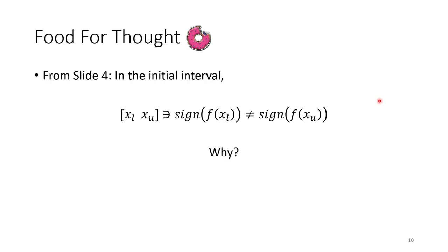I want to leave you with something to think about. In the initial interval, the signs of f(xl) and f(xu) must differ, otherwise the algorithm fails. But why does the algorithm fail? There are at least two answers, both of which are related to the number of roots in the bracket. And that's it for this video. I really hope this helped, and I'll see you soon.